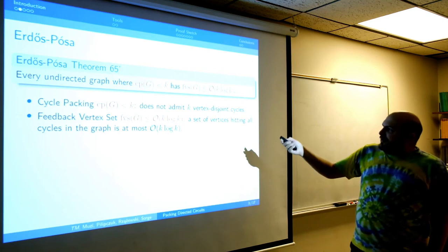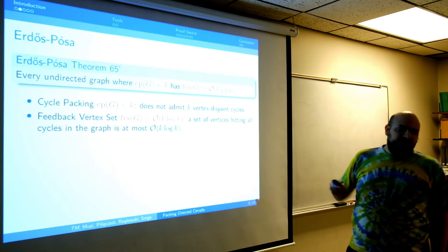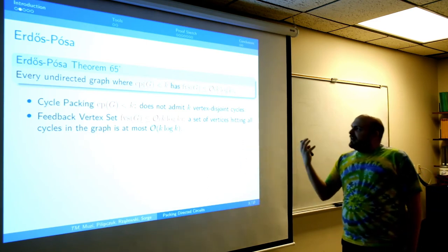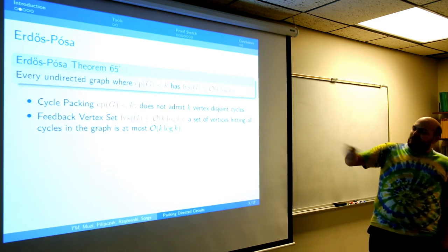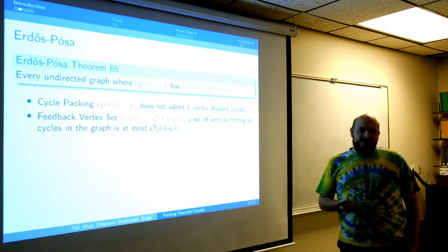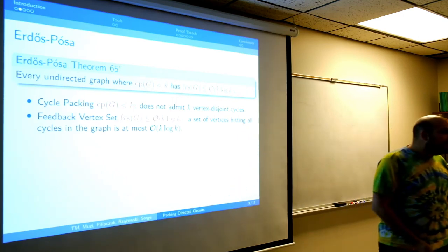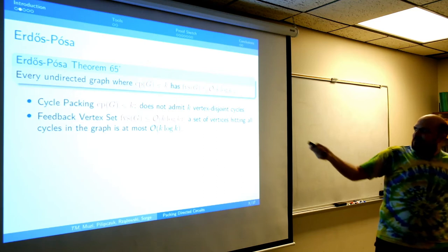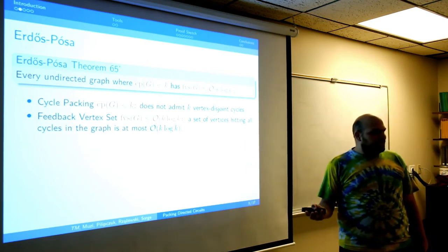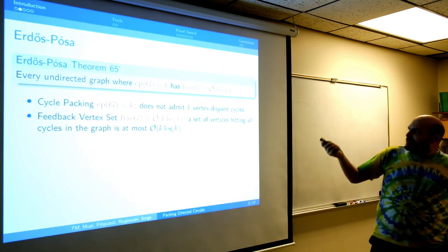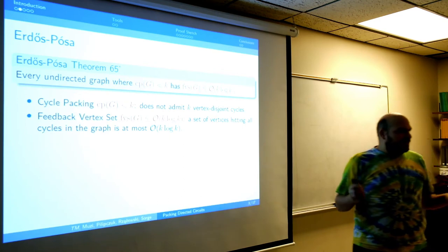We also know that this result is tight. There are some graphs that don't have k vertex-disjoint cycles but where you need the feedback vertex set to be somewhat large — k log k times some constant. The original paper contains a construction using a probabilistic proof. Later you can also think about some expanders.